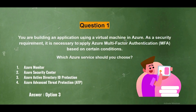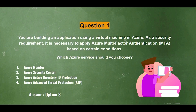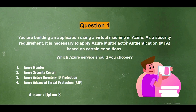Question 1. You are building an application using a virtual machine in Azure. As a security requirement, it is necessary to apply Azure Multi-Factor Authentication based on certain conditions. Which Azure service should you choose? The options are: Option 1, Azure Monitor; Option 2, Azure Security Center; Option 3, Azure Active Directory ID Protection; Option 4, Azure Advanced Threat Protection.